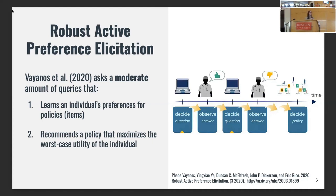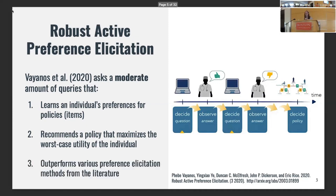Then it will recommend a policy at the very end that will maximize the worst-case utility of that individual. This method is super effective — it has great qualities because of the robust optimization being used, and it actually outperforms various preference elicitation methods from the literature. It's been shown to work very well.